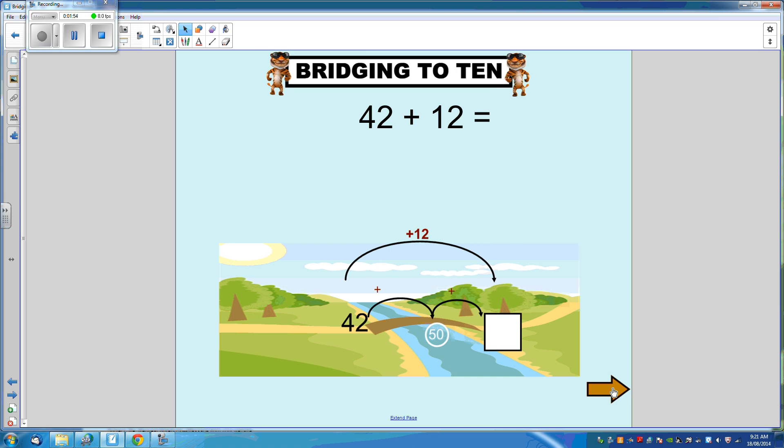Another example using larger numbers again. 42 plus 12. Okay, so we've started at 42. We want to get to the next decade using our knowledge of our friends of 10. So we want to get to 50. 42 plus 8 will get us to 50.